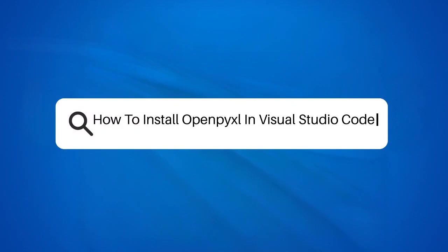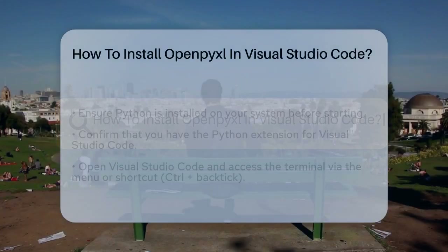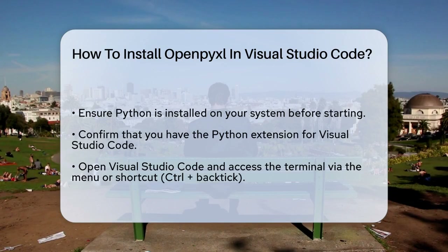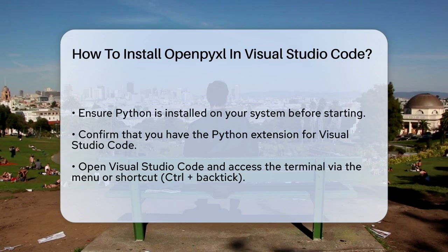How to install OpenPixel in Visual Studio Code. If you're working on a project in Visual Studio Code and need to handle Excel files, you might be wondering how to install the OpenPixel library. Let's break it down step by step. First, you need to ensure you have Python installed on your system, as OpenPixel is a Python library.